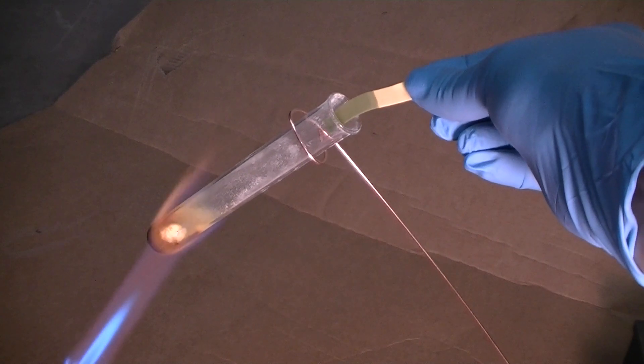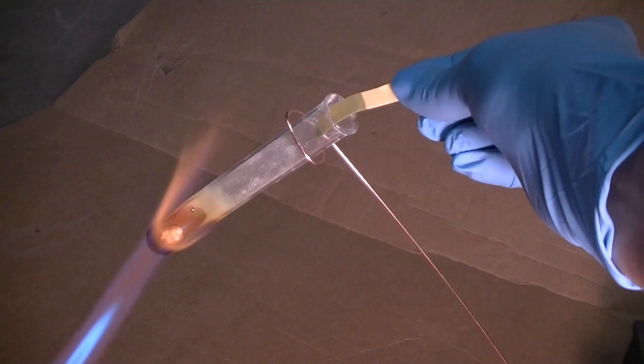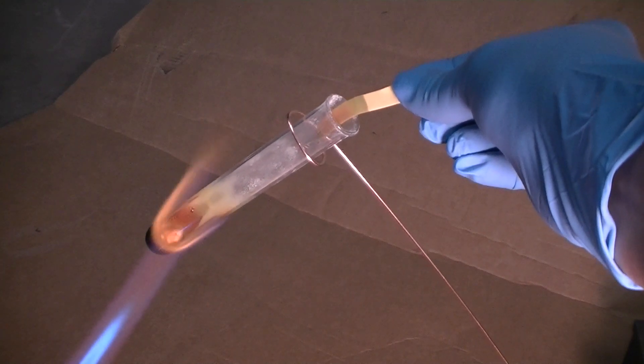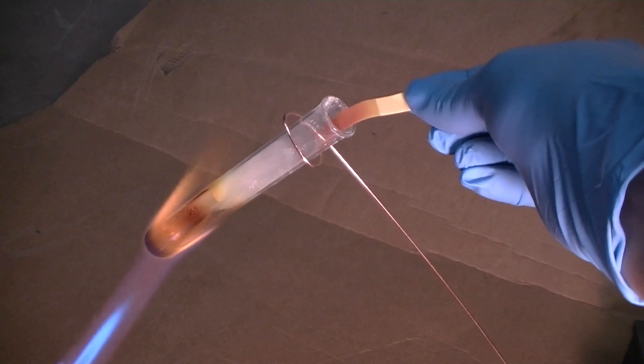At the neck of the test tube we are holding some moist litmus paper, moistened in water, hence the original green color. Green being a neutral pH of around 7, which is what you would expect for water.